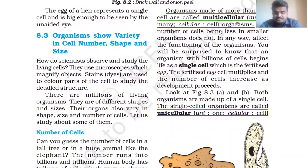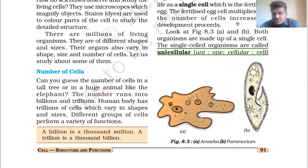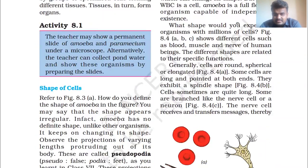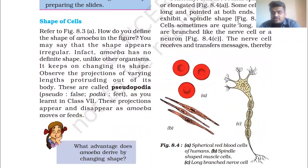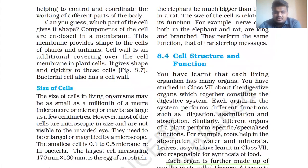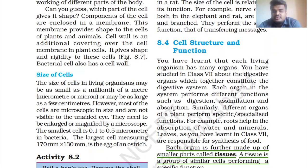After this, we went through cell shapes. In figure 8.4, you are given different shapes of cells — that much variety is possible. Next, we looked at the size of cells. The size of a cell does not simply depend on the size of the organism.